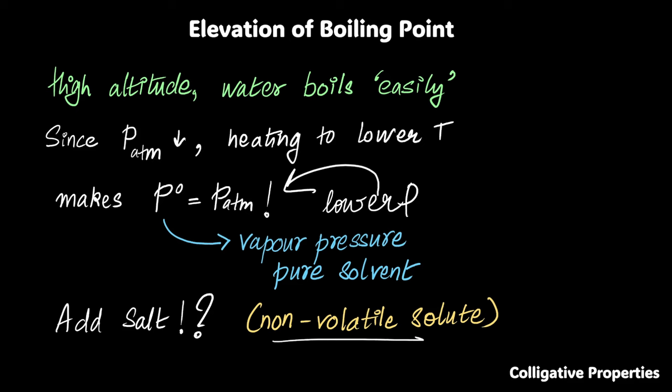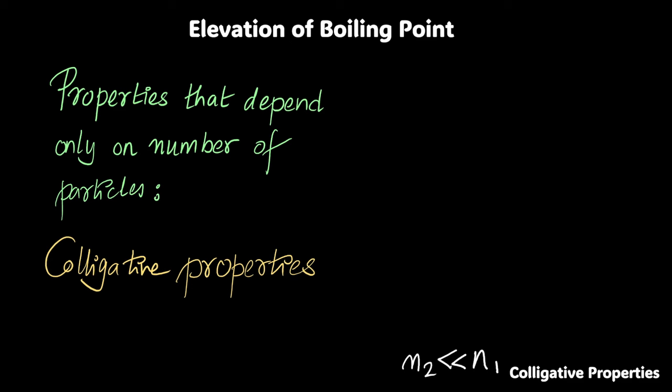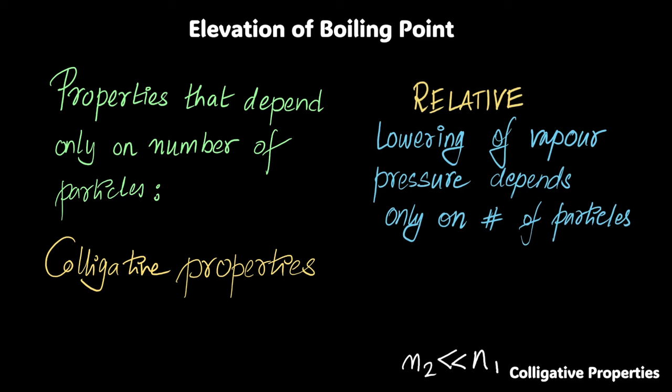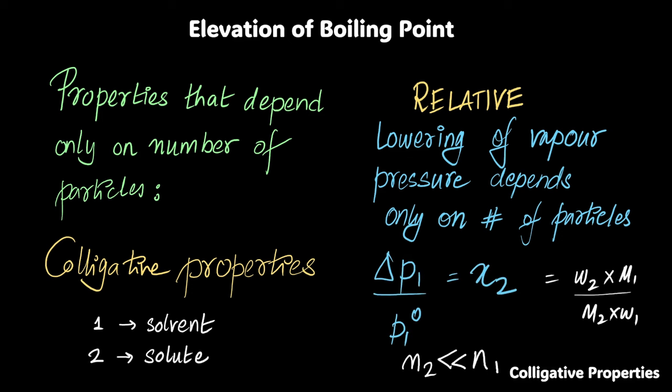Before you continue with this video, I think it would be good to revise a couple of things. Properties that depend only on number of particles, they are known as colligative properties. If you think this is a little random, don't worry. This makes a lot of sense. We'll get back to it. Relative lowering of vapor pressure depends only on number of particles. You'll see something at the bottom of my screen pop up right now.